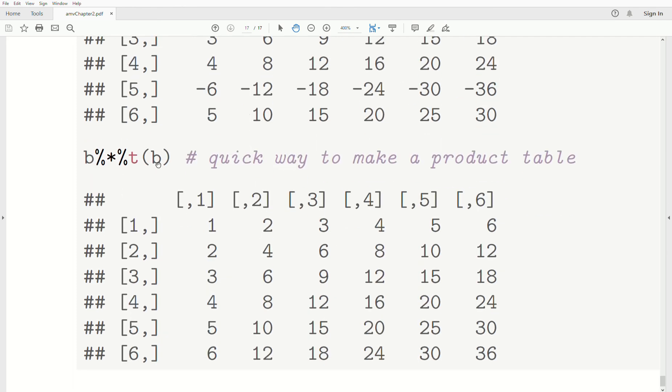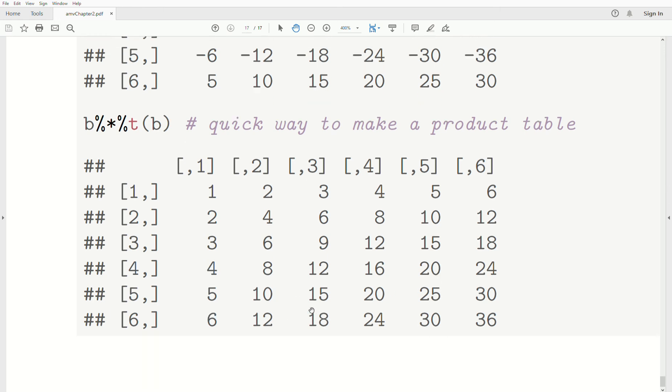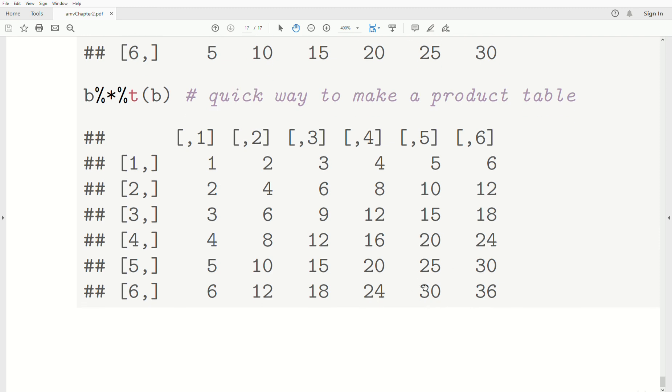And note that if we do that by itself, B is a vector of 1, 2, 3, 4, 5, 6, and then we take it times the transpose of B. It's actually a quick way to make a product table, right? 2 times 4 is 8. 5 times 3 is 15, etc. So kind of an interesting note there.